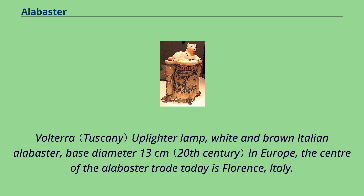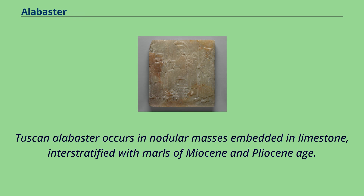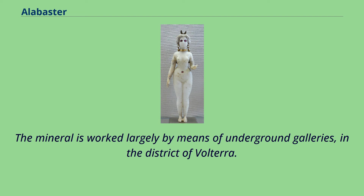Volterra uplighter lamp, white and brown Italian alabaster, base diameter 13 cm. In Europe, the center of the alabaster trade today is Florence, Italy. Tuscan alabaster occurs in nodular masses embedded in limestone, interstratified with marls of Miocene and Pliocene age. The mineral is worked largely by means of underground galleries in the district of Volterra.